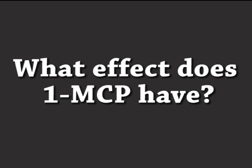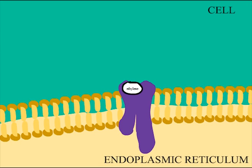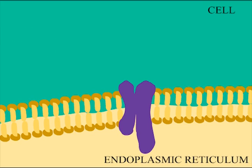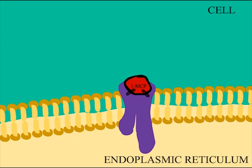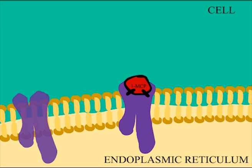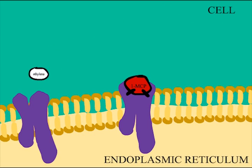What effect does 1-MCP have on this downstream signalling? 1-MCP bonds covalently to the protein complex receptor, blocking and inhibiting the ethylene signal, thus delaying the ripening process. Climacteric fruits continuously produce new protein complex receptors, which is what allows ethylene signalling to occur once the 1-MCP has been applied.